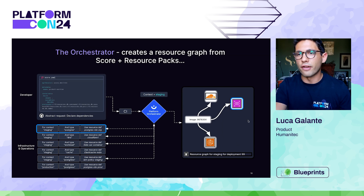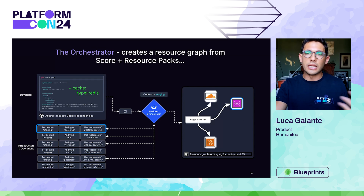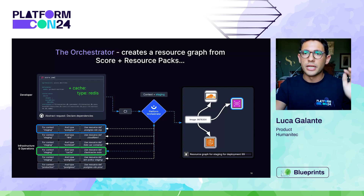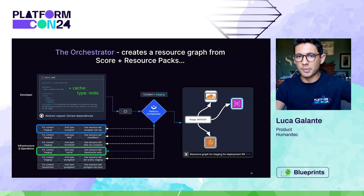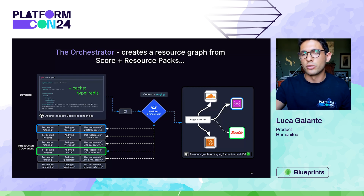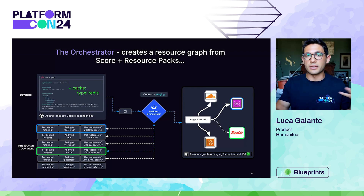The orchestrator creates a graph-based representation of the workload with its different dependencies — DNS, an S3 bucket, the EKS cluster, and the RDS instance, all provisioned. Now, if a developer wants to add another dependency, like a cache of type Redis, they just add two lines of code to the Score file. On the next git push, the orchestrator understands it needs ElastiCache Redis for staging context and creates an updated representation of the workload with the new dependency, which gets provisioned and deployed to your clusters or handed off to ArgoCD.